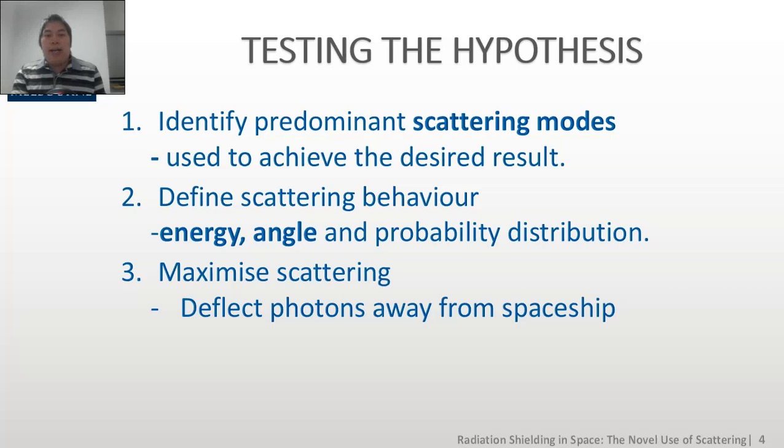So, to test this hypothesis, we are to identify first the predominant scattering methods that would be used to validate this hypothesis. Second, define an equation or a relationship that relates the energy and the angle of the scattered photons with the relative proportion of scattered photons. And third, we aim to understand how an optimal range of scattering angles that exists could be obtained for which the majority of the scattered photons with highest energy will fly off time after striking the shielding object.